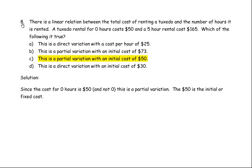These are the solutions for question number 8 on the Linear Relations EQAO Practice Question Grade 9 Applied Questions. At number 8 you are asked: there is a linear relation between the total cost of renting a tuxedo and the number of hours it is rented. A tuxedo rental for 0 hours costs $50 and a 5-hour rental costs $165. Which of the following is true?